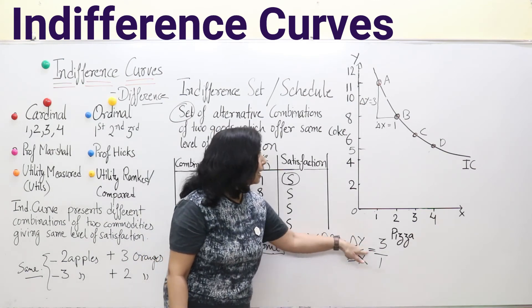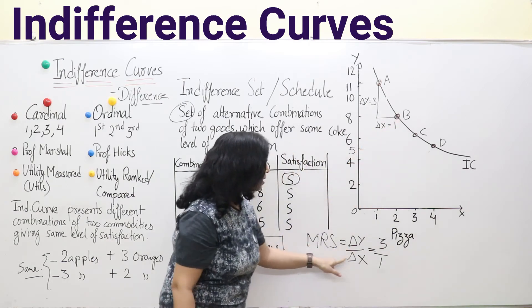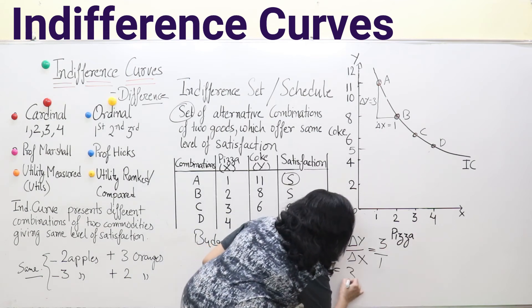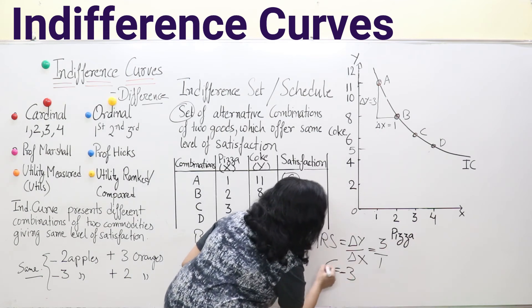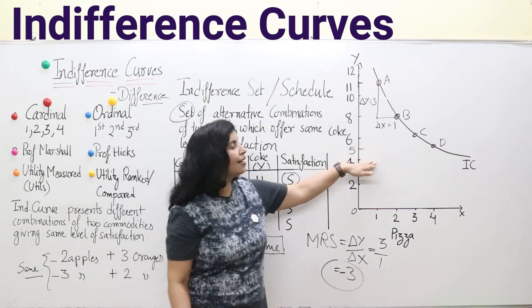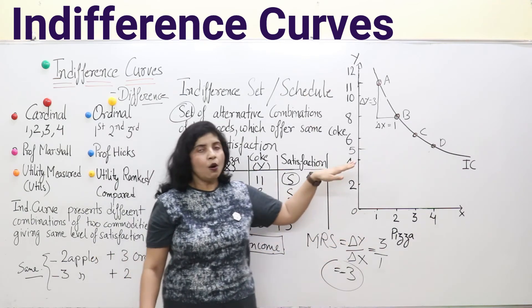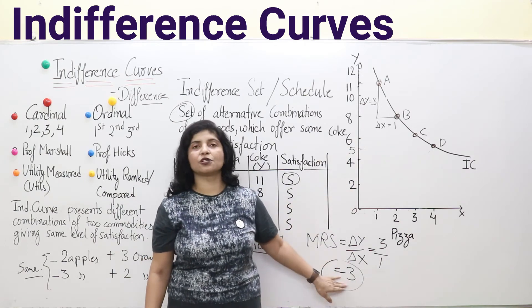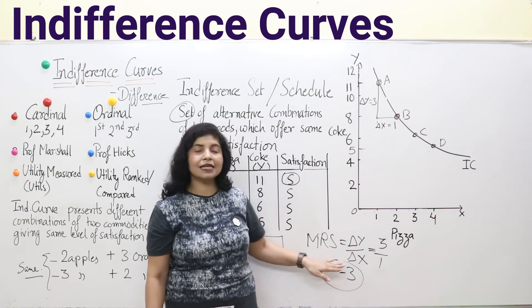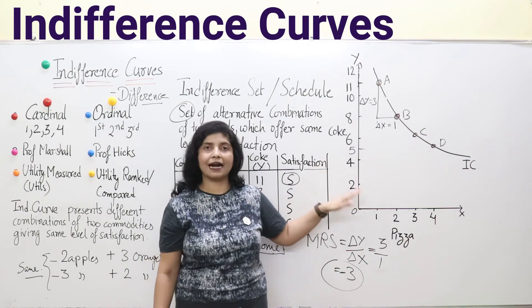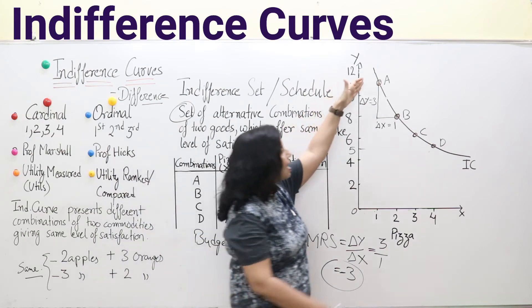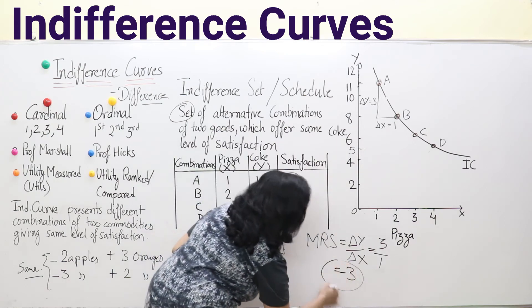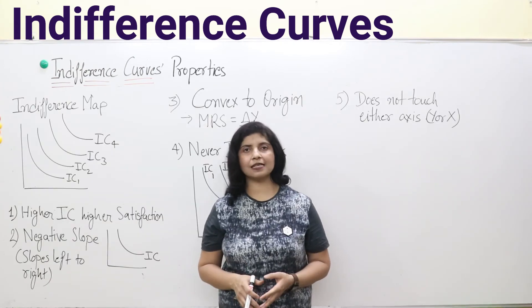So at point B, MRS equals delta Y over delta X, which is 3 divided by 1, equals 3. We take it as negative because to increase consumption of pizza we must decrease consumption of coke. That is why MRS is negative, meaning the slope of the indifference curve is negative. As we move from left to right on the curve, MRS is minus 3.